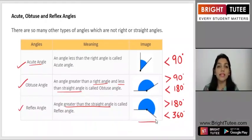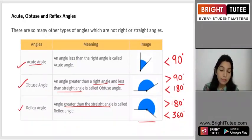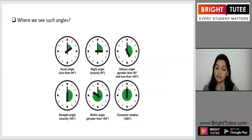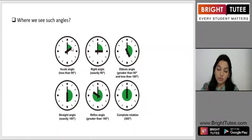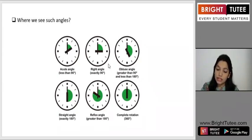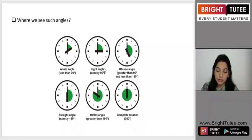Now let's see where in real life we look at these kinds of angles — acute, obtuse, and reflex. A simple example is clocks. Here are some clock faces. In the first image the time is 2 o'clock, and we can clearly see it is making an angle less than 90 degrees, so this is an acute angle. In the second clock face it is making exactly 90 degrees at 3 o'clock, so it is a right angle.